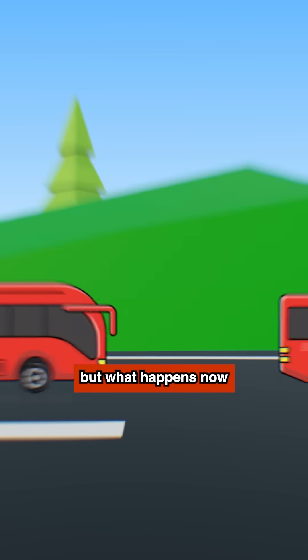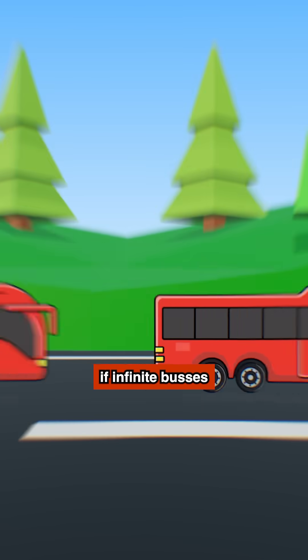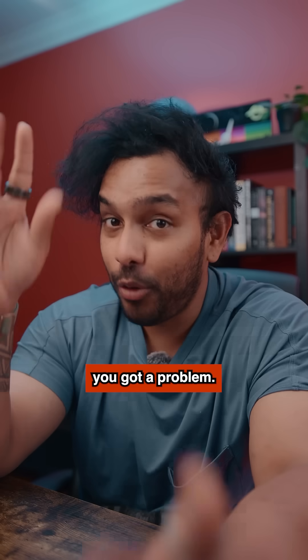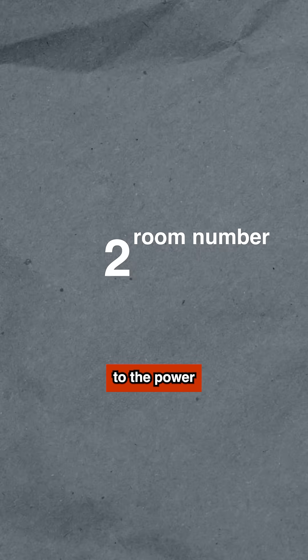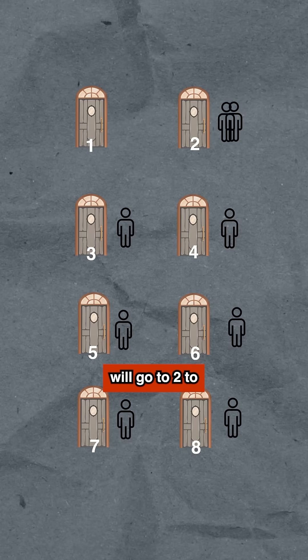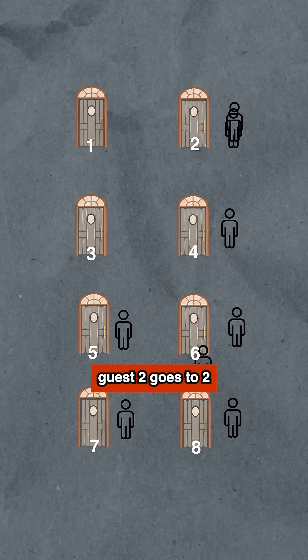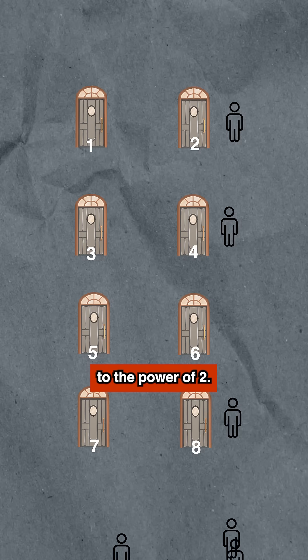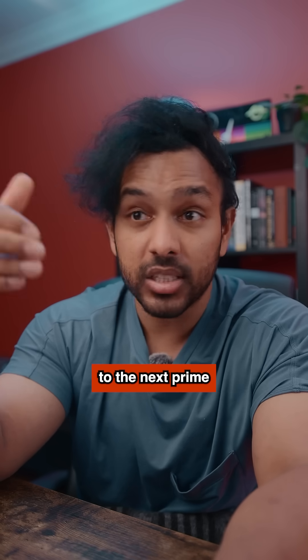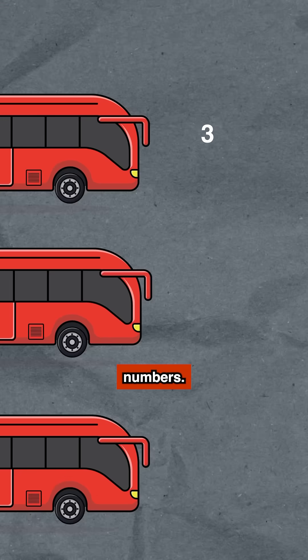But what happens if infinite buses show up with infinite people? Now you've got a problem. What you do is tell each current guest to go to a room that's the first prime number to the power of their room number — so guest one goes to two to the power of one, guest two goes to two to the power of two.